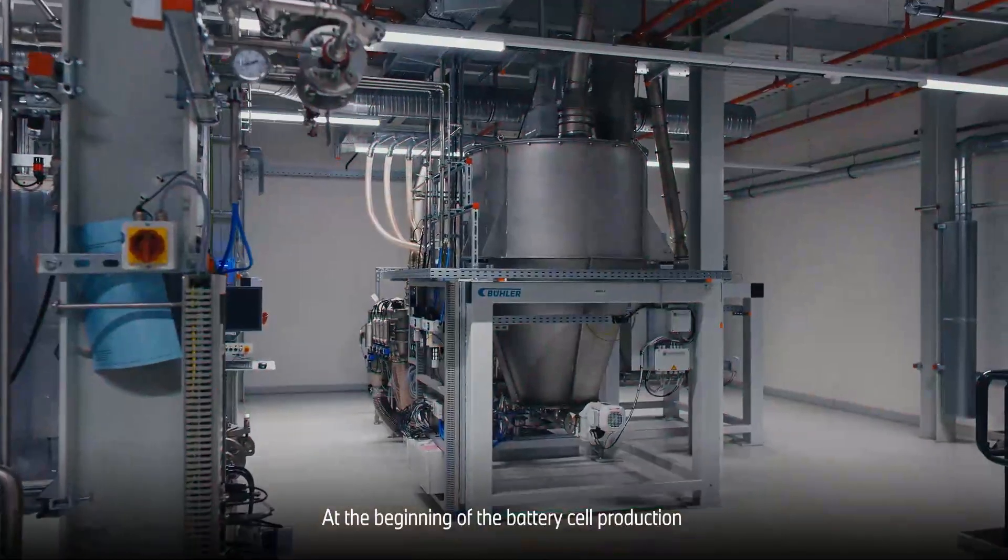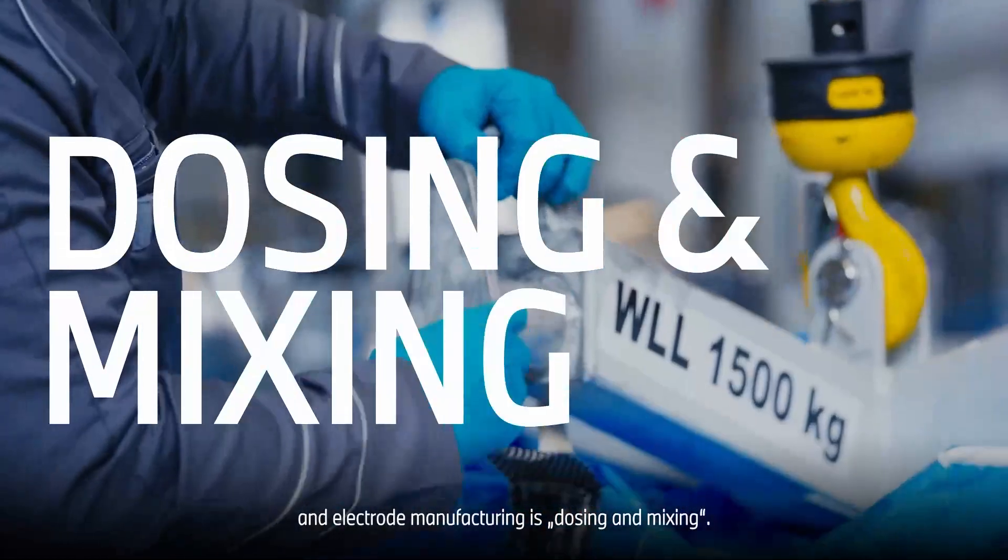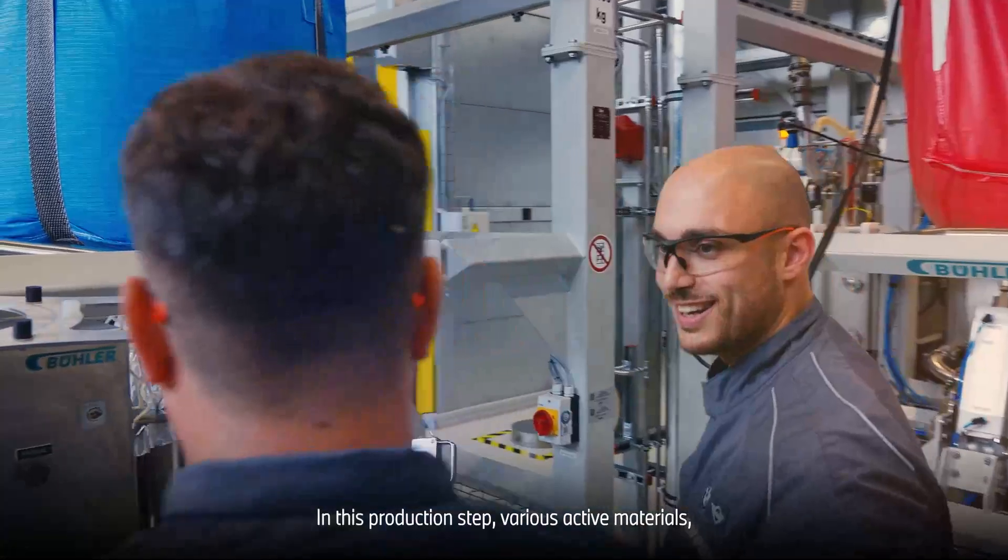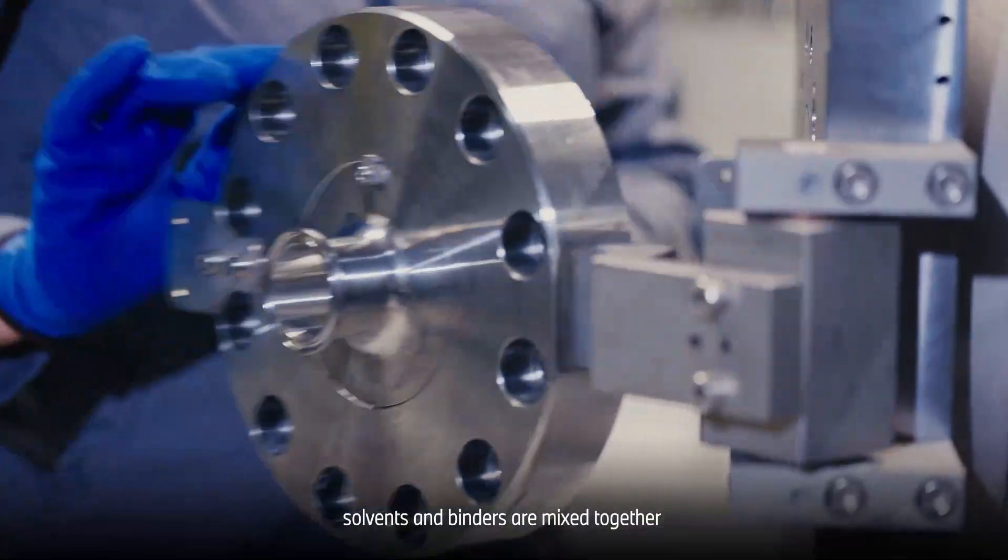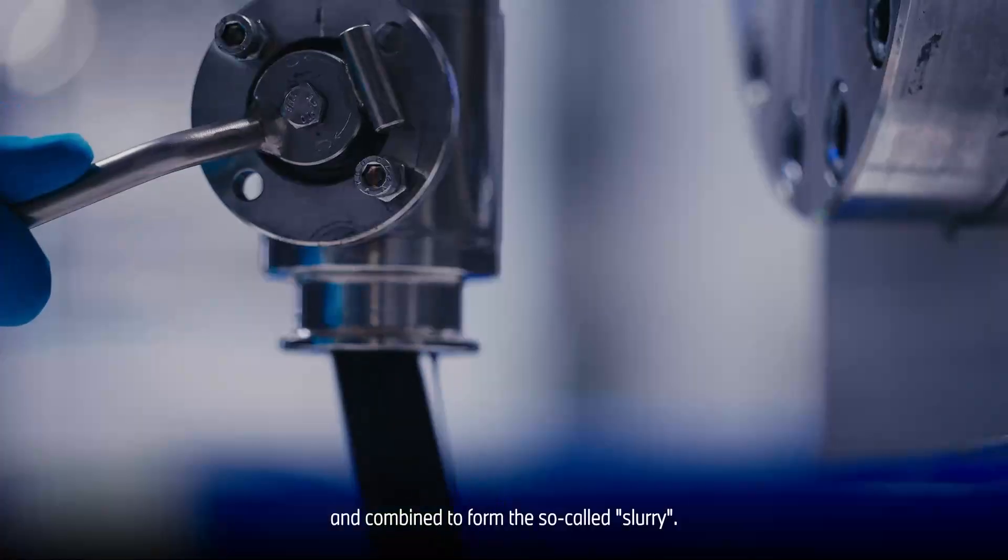At the beginning of battery cell production and electrode manufacturing is dosing and mixing. In this production step, various active materials, solvents, and binders are mixed together to form the so-called slurry.